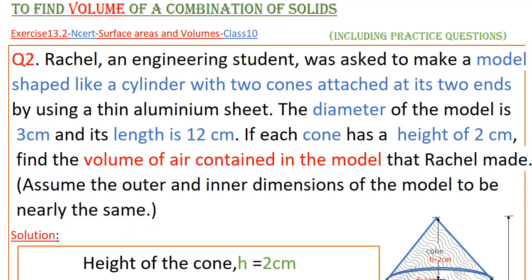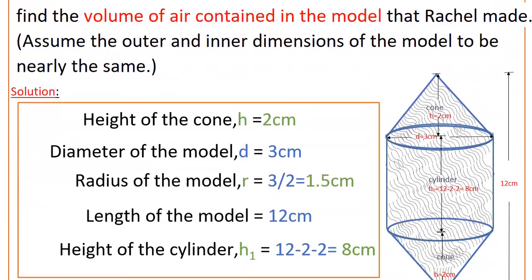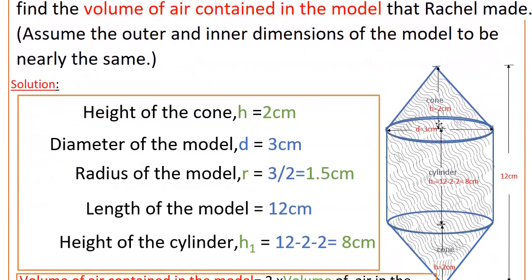So here Rachel made a model that is a cylinder with two cones attached at its two ends. The height of the cone is given as 2 centimeters and diameter of the model is 3 centimeters. Therefore, radius of the model r is equal to 3 by 2, diameter by 2, that is 1.5 centimeters. So here radius of the cone as well as radius of the cylinder is also 1.5 centimeters.